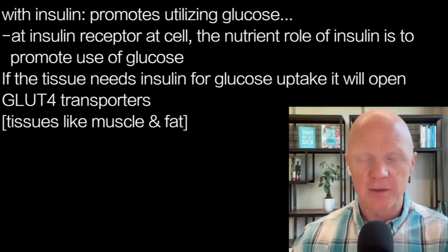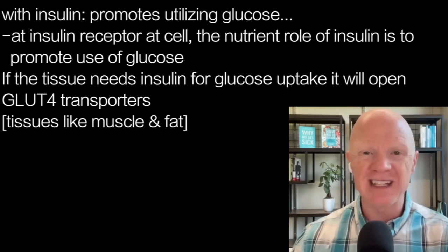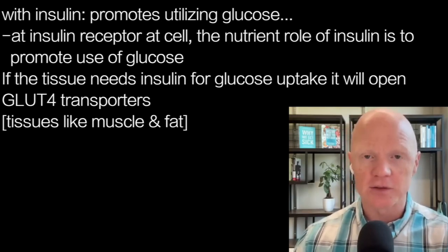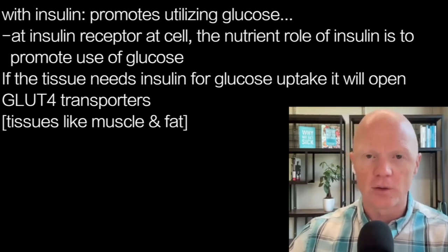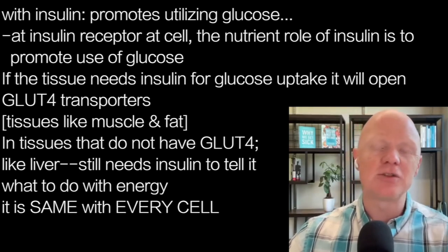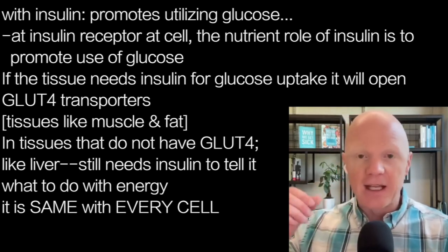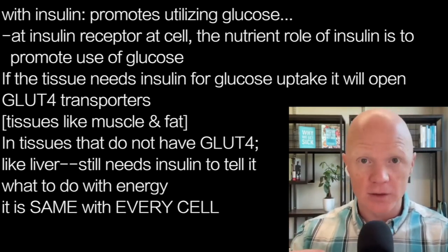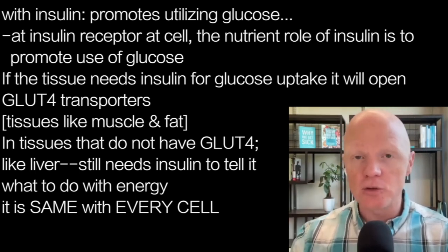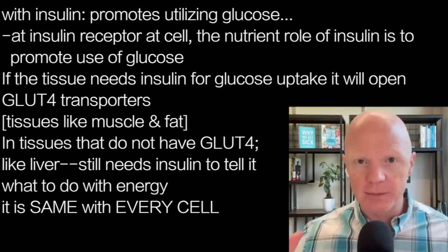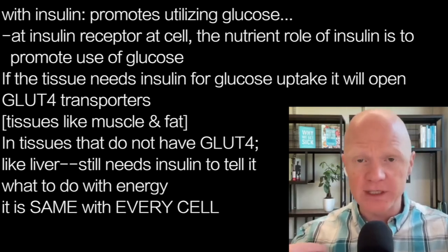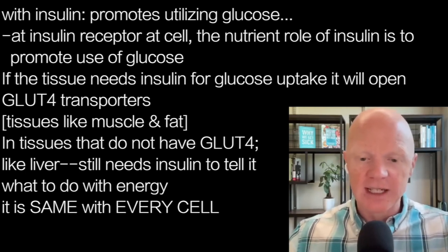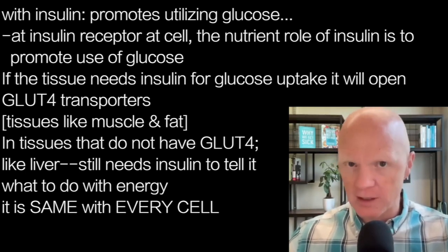For almost everyone it's muscle — except for the profoundly obese, where of course it's fat. But even in the average individual, muscle and fat mass constitute the majority of their mass and they're insulin-dependent for glucose. They need insulin to open those GLUT4 glucose transport doors. Even in tissues that don't have GLUT4, like the liver — the liver doesn't need insulin to take in glucose, but it still needs insulin to direct what to do with the energy. Every single cell of the body follows that pattern, including the Randle Cycle.